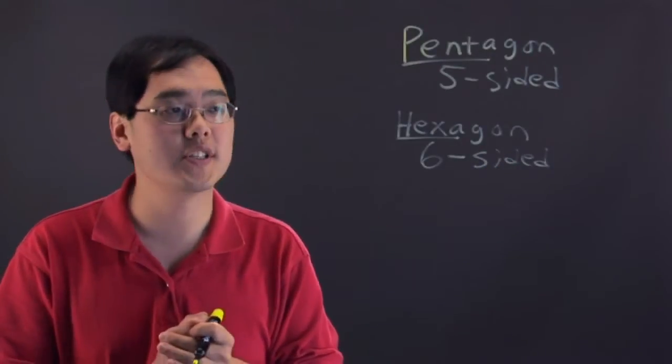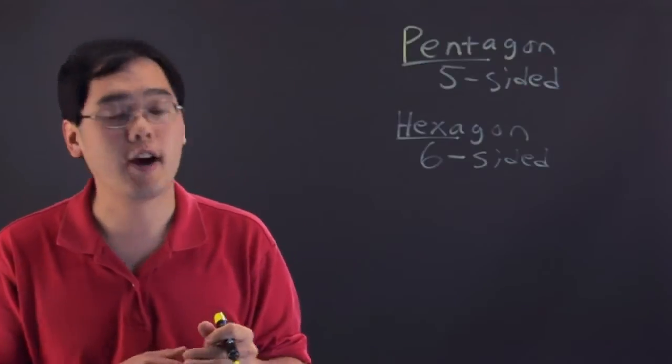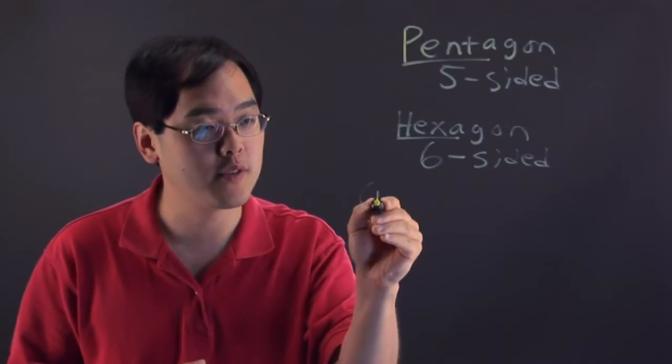So we have a five-sided closed shape versus a six-sided closed shape. Now, another difference between the two, let me give you this particular formula here.